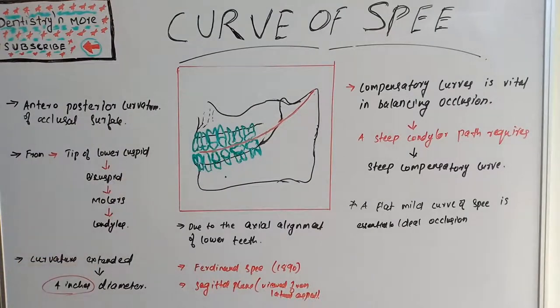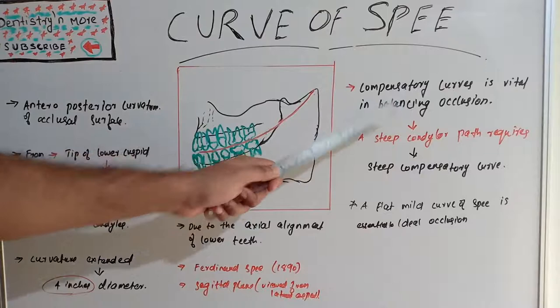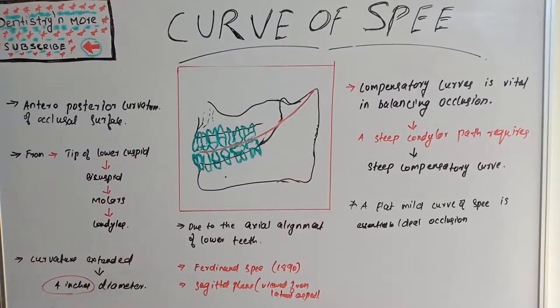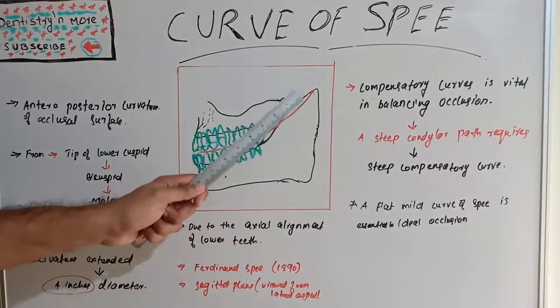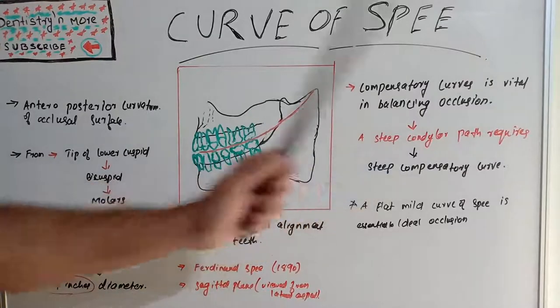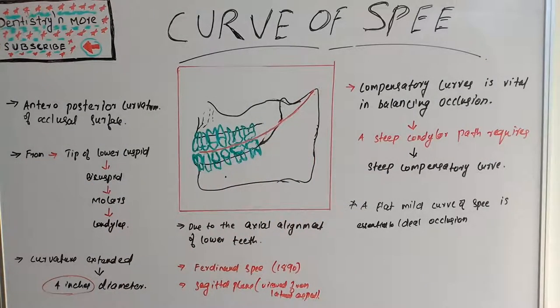This was given by Ferdinand Spee and it is vital in balancing occlusion because a steep condylar path requires a steep compensating curve. Ideally we would require a flat mild curve of spee for ideal balanced occlusion.